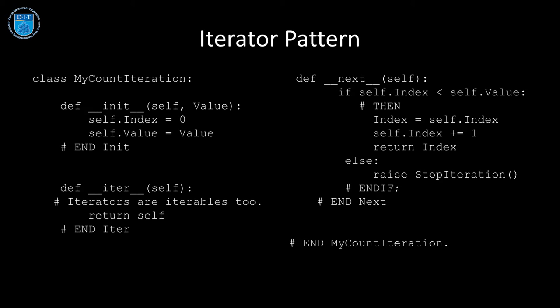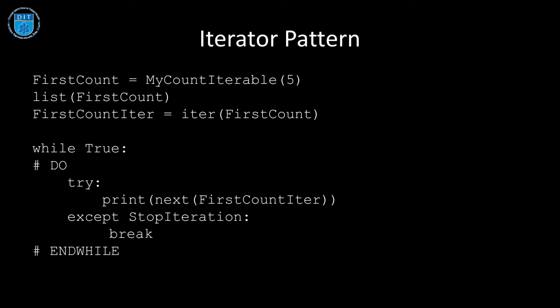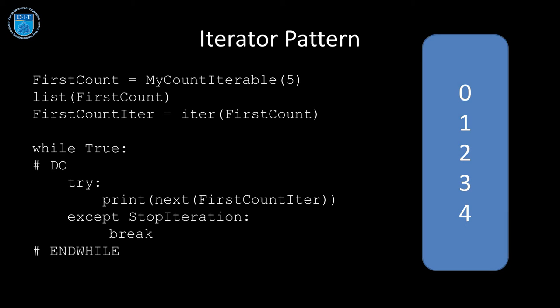The code in terms of how we run it - this is the execution code - we create an instance of MyCountIterable up to five. We produce a list out of that, then we create an iter of that and call it firstCountIter. That's the iterable version of the iteration. Then we do a loop and say keep printing out the next value of firstCountIter. What does that all do? It prints zero, one, two, three, four. That's what all that code does.